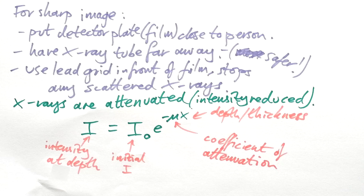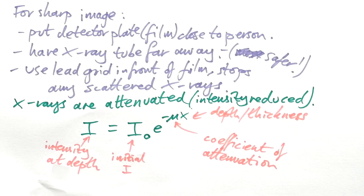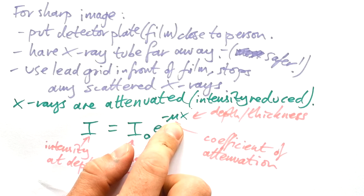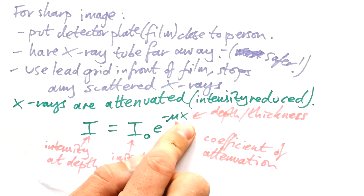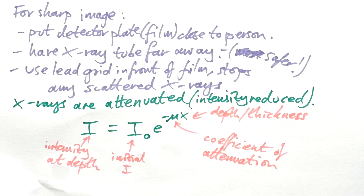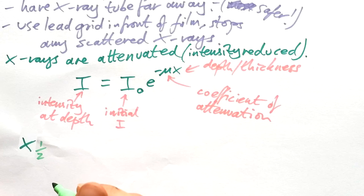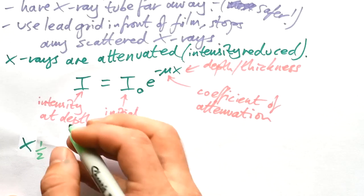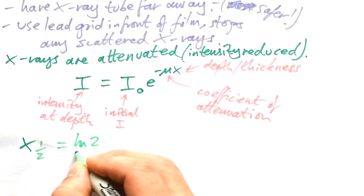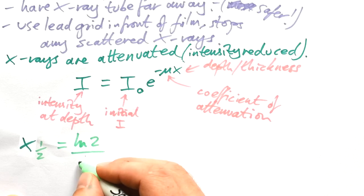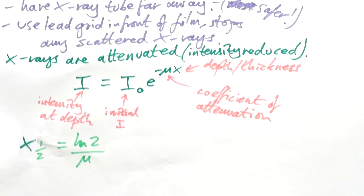And here we have some constant. This is the coefficient of attenuation or the attenuation coefficient. And that is the thing that changes from material to material. If this is in meters, then we know that mu must be in meters to the minus one. If we want to know the half thickness, that is the distance at which the intensity has halved, that is equal to log two divided by mu, the attenuation coefficient.